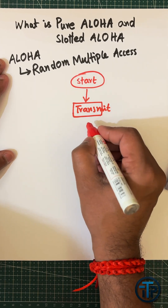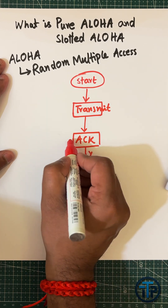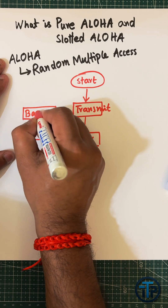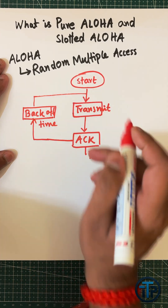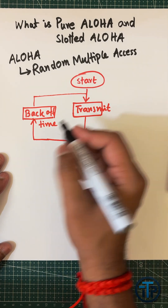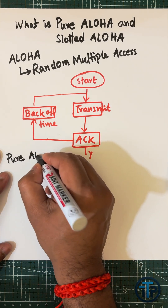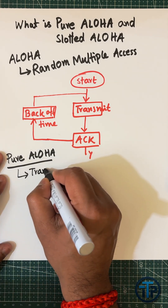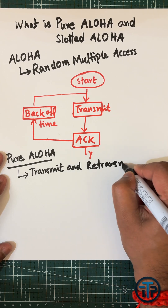If you receive the acknowledgement, then there is a success. If you don't receive any acknowledgement, then wait for some kind of time — we call it backoff time — and then retransmit. Pure ALOHA and slotted ALOHA mostly differ in terms of the transmit and retransmit time.